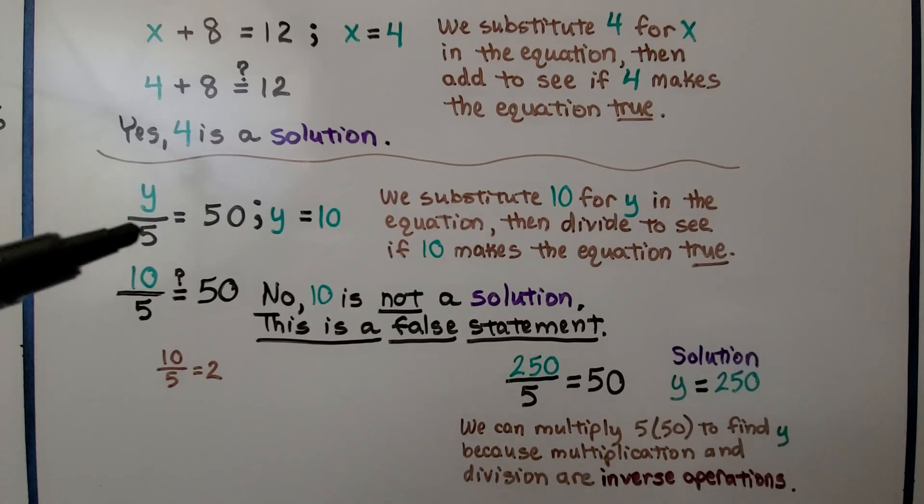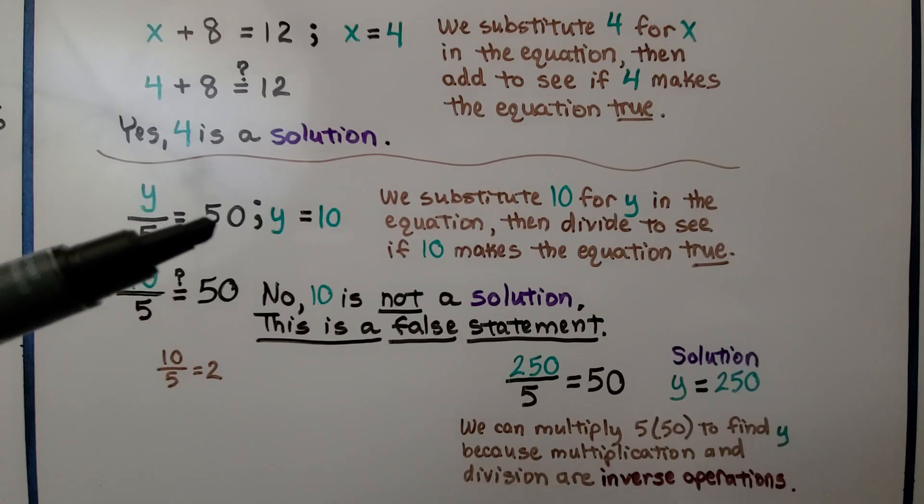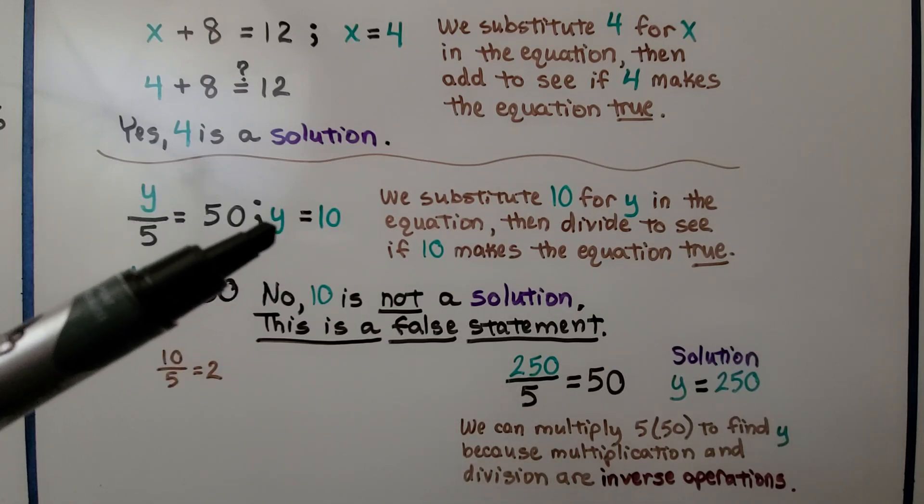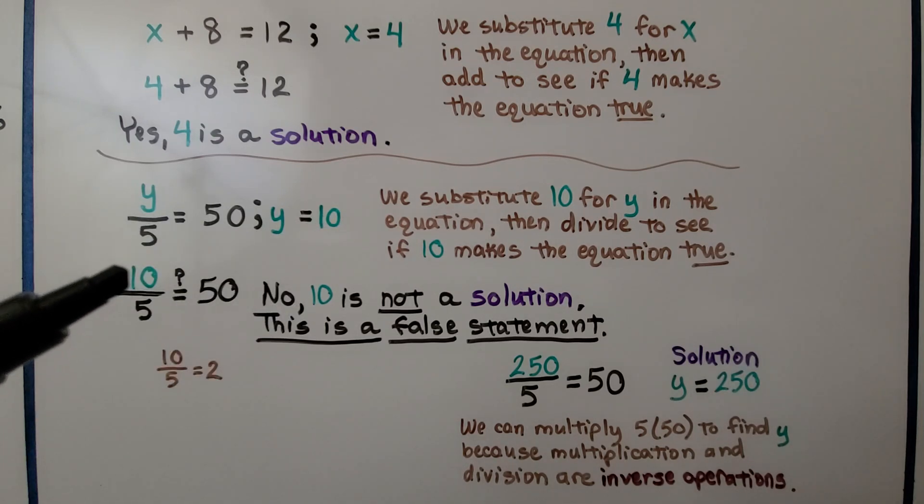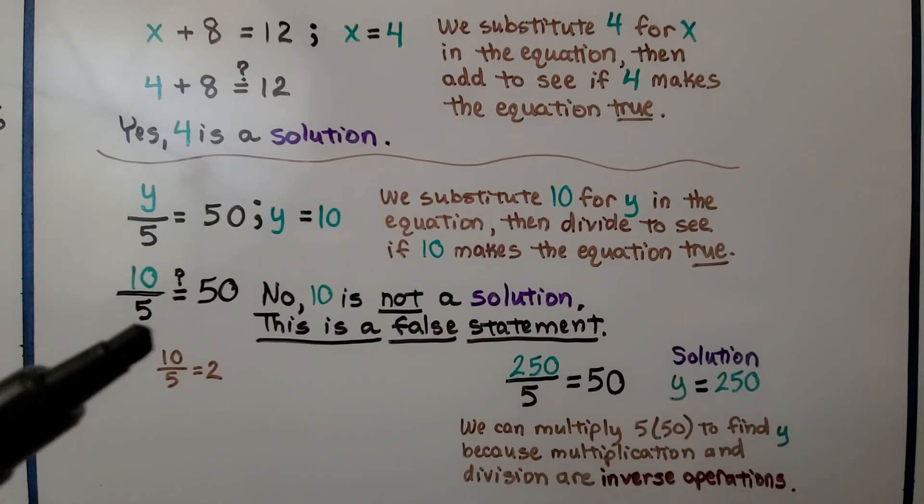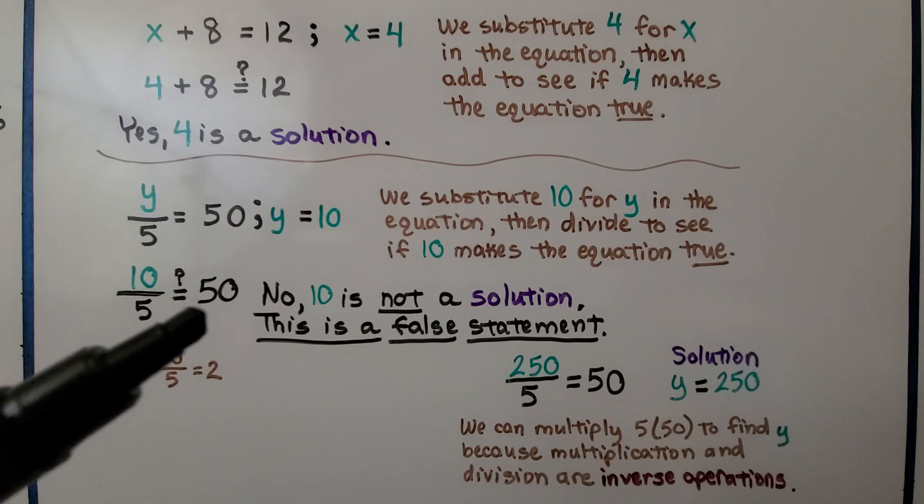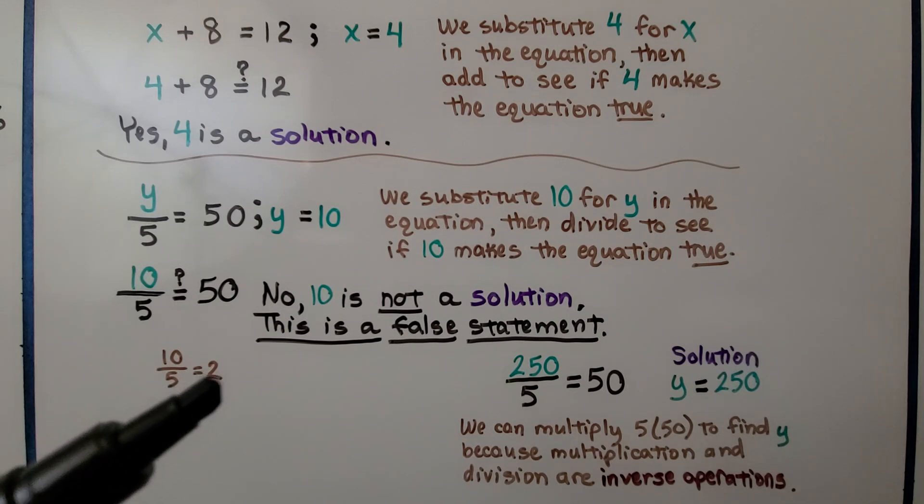Here we have y divided by five equals fifty, and it's given that y is equal to ten. We substitute ten for y in the equation, then divide to see if ten makes the equation true. Ten divided by five, is that equal to fifty? No. Ten is not a solution. This is a false statement. Ten divided by five is equal to two.